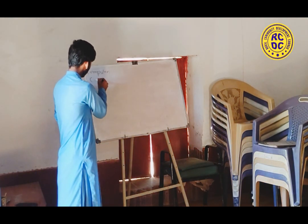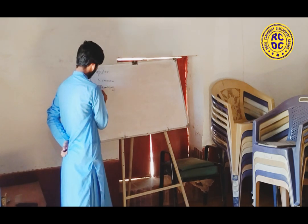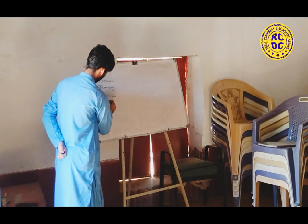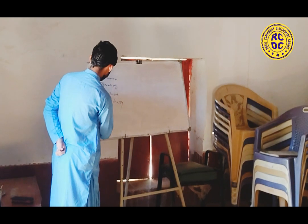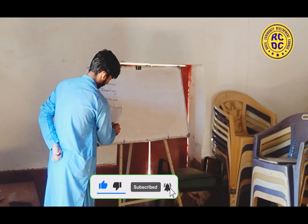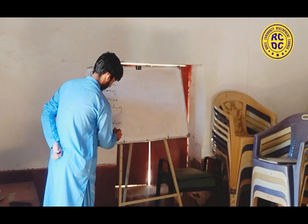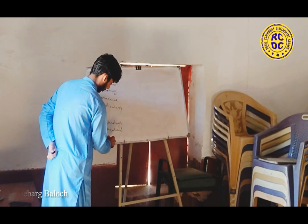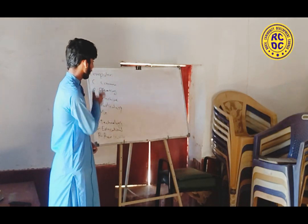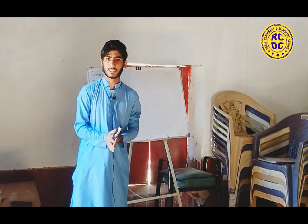The full form of COMPUTER is: C for Common, O for Operating, M for Machine, P for Particularly, U for Used, T for Technology, E for Educational, and R for Research. By this combination, the word collected is 'computer', as we can see.